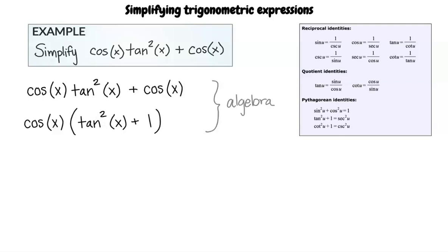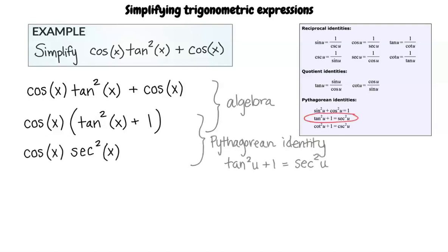Can we substitute secant squared of x for tangent squared of x plus 1? Yes, exactly. Substituting secant squared of x for tangent squared of x plus 1, we write cosine of x times secant squared of x.